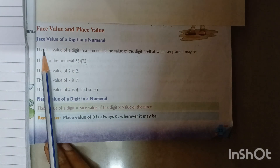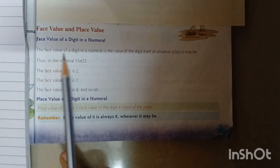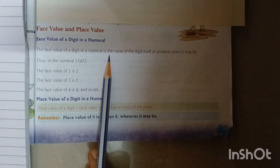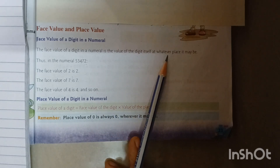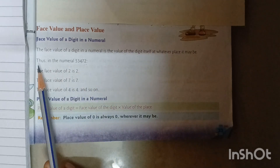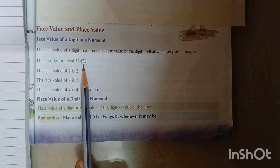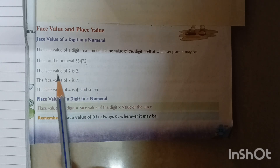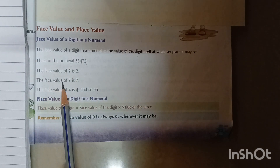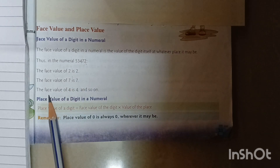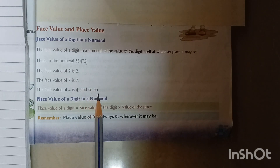Face value of a digit in a numeral. The face value of a digit in a numeral is the value of the digit itself, at whatever place it might be. For example, in the numeral 53,472, the face value of 2 is 2, the face value of 7 is 7, and the face value of 4 is 4, and so on.